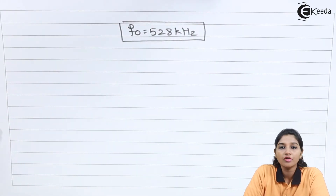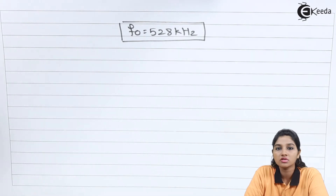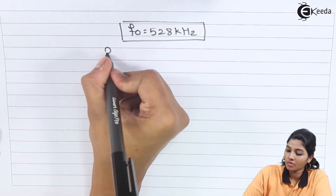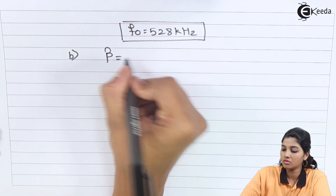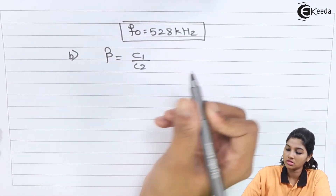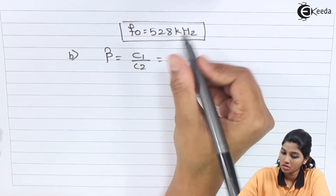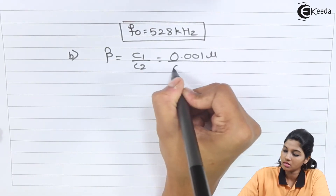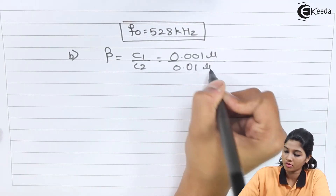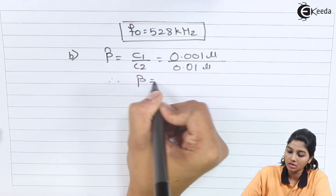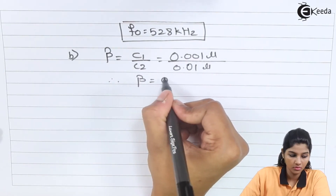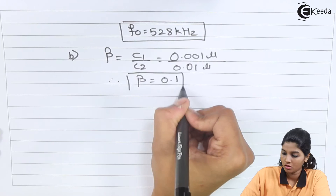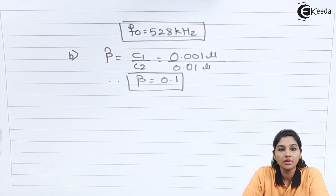Next, find the feedback fraction beta. Beta = C1/C2 = 0.001 µF / 0.01 µF = 0.1. So the feedback fraction beta equals 0.1.